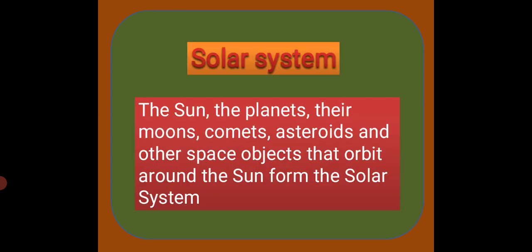The solar system consists of the sun, the planets, their moons, comets, asteroids and other space objects that orbit around the sun.